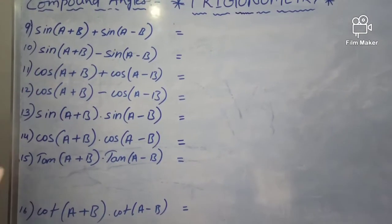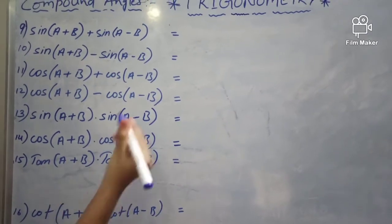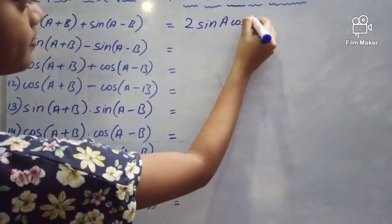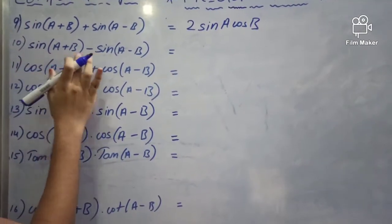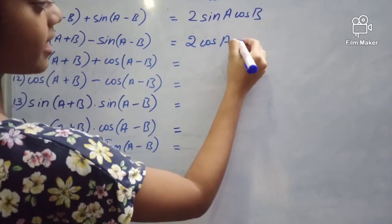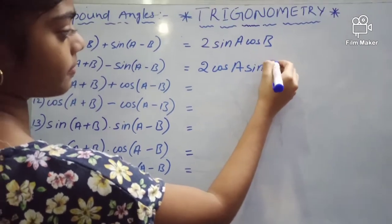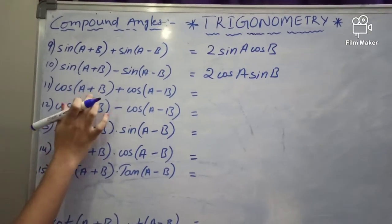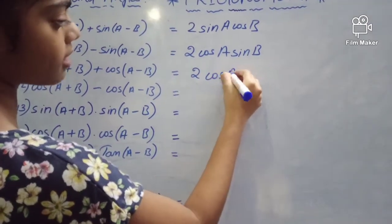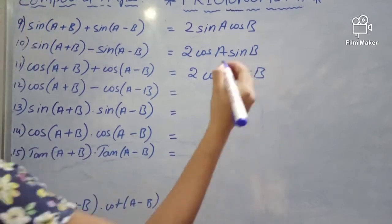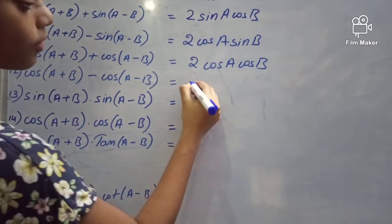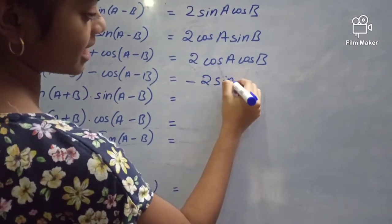Now, sin A plus B plus sin A minus B equals 2 sin A cos B. Cos A plus B minus cos A minus B equals minus 2 sin A sin B.